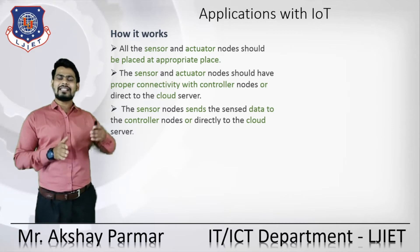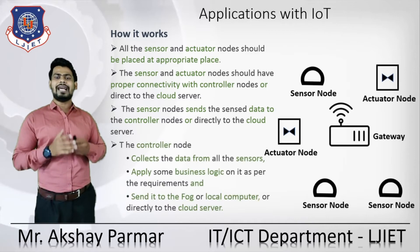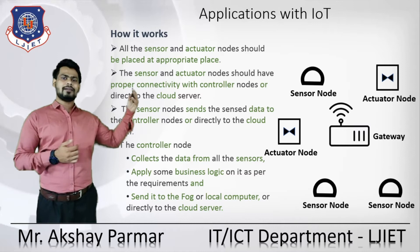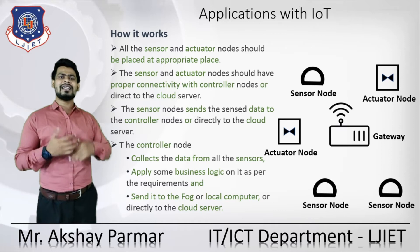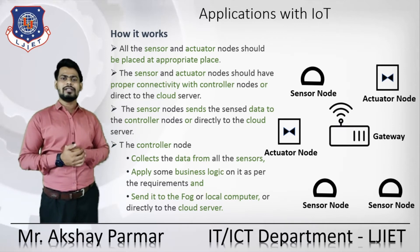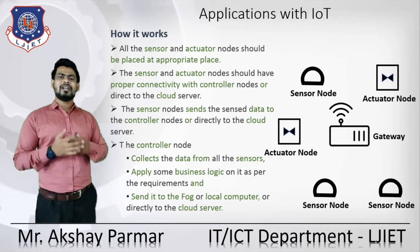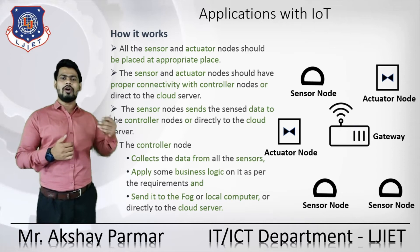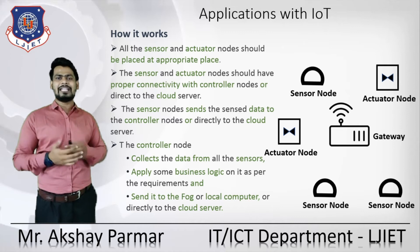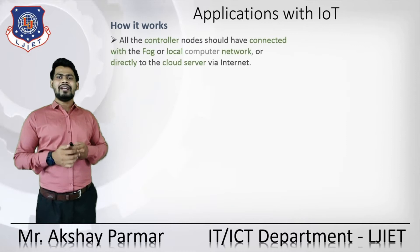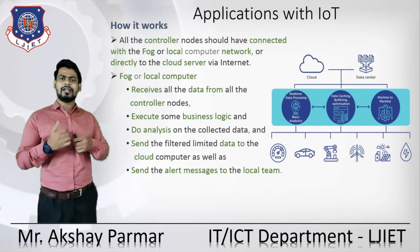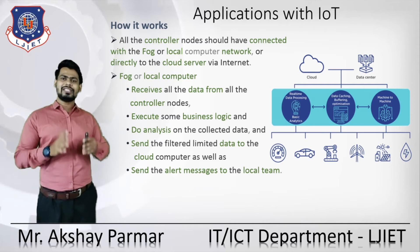The sensor node sends the sensed data to the controller nodes or directly to the cloud via the internet. The role of the controller node is: it collects data from the sensors, which are sensing the physical properties of the surroundings. After collecting the data, the controller applies some business logic as per its requirement, then sends it to the FOG or local computer, or directly to the cloud server for storage and analysis purposes. All controller nodes should be connected with the FOG, local computer, or cloud server via internet.